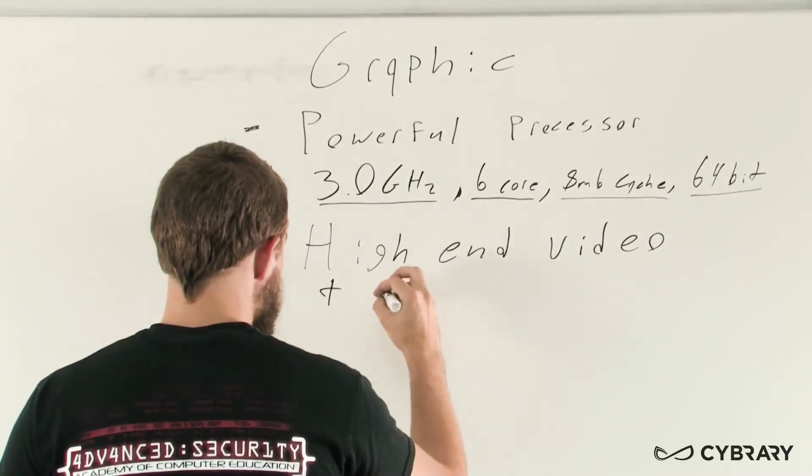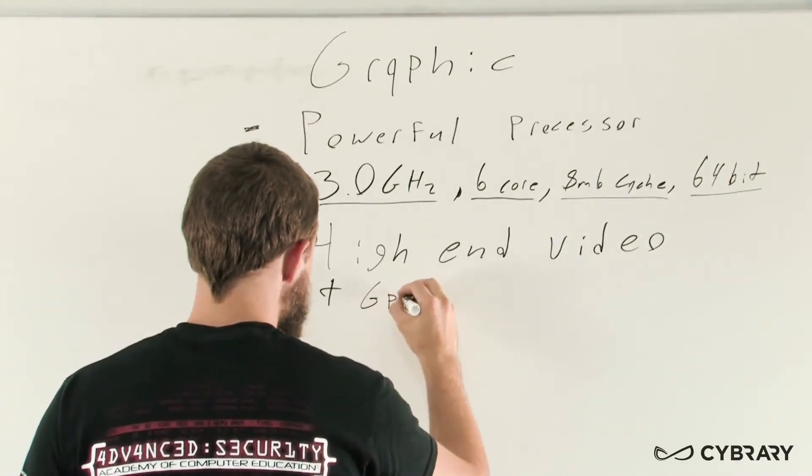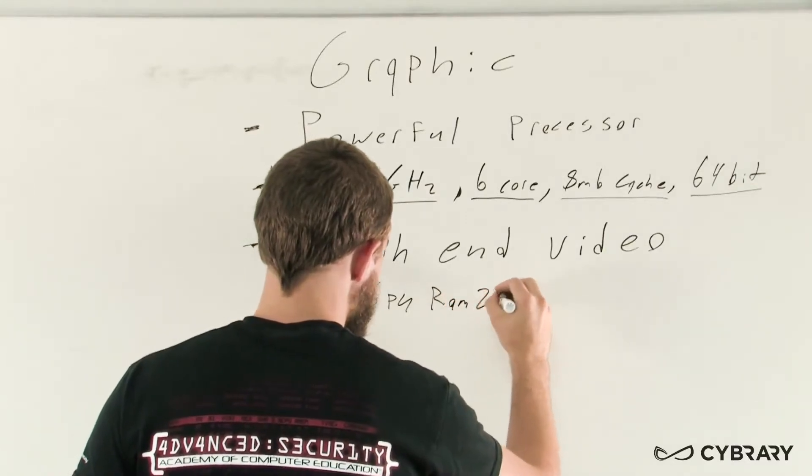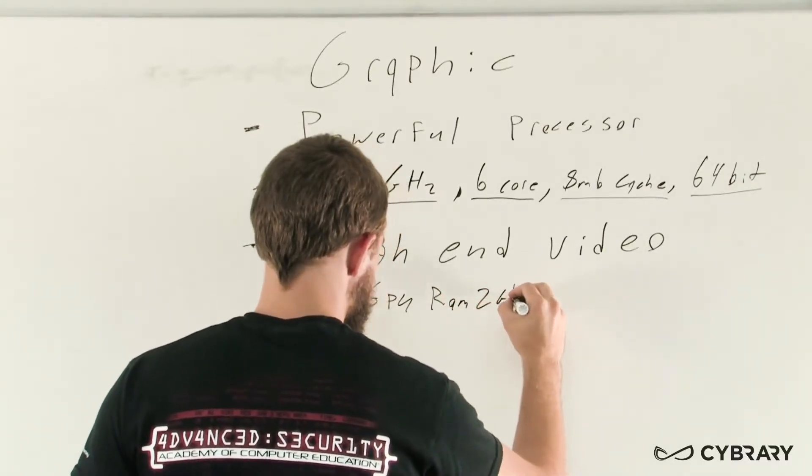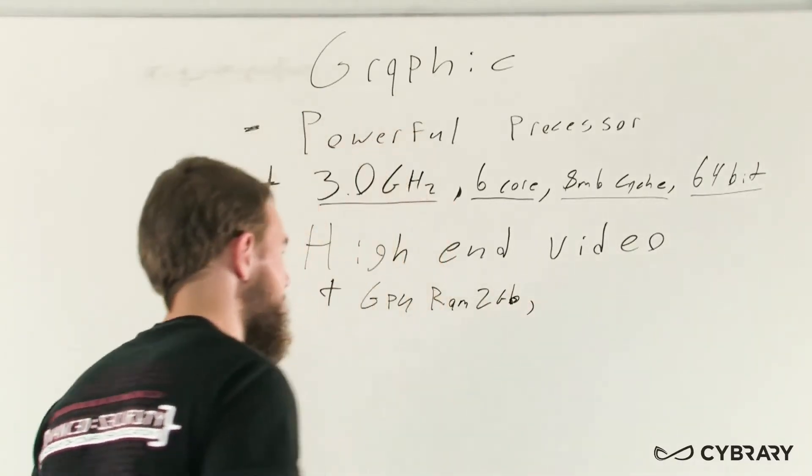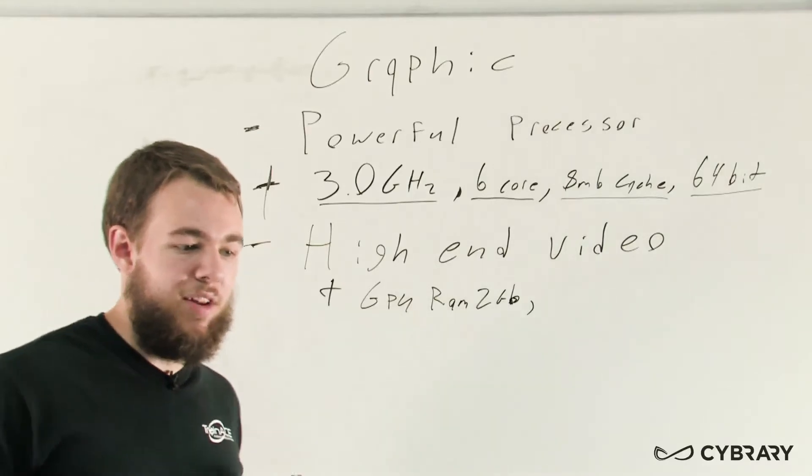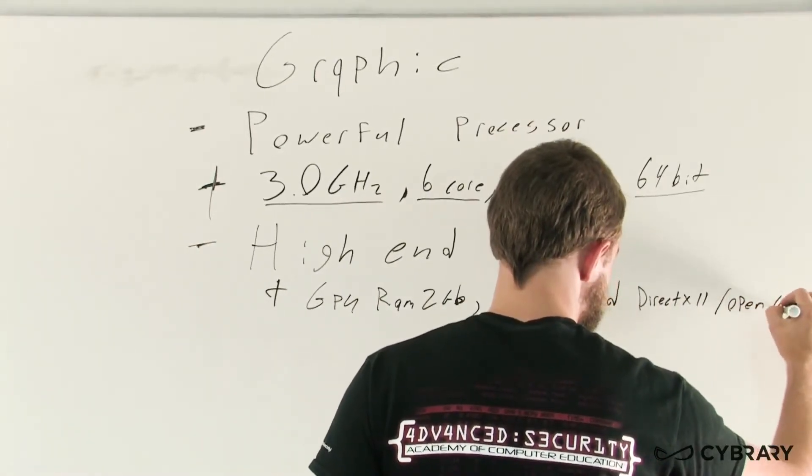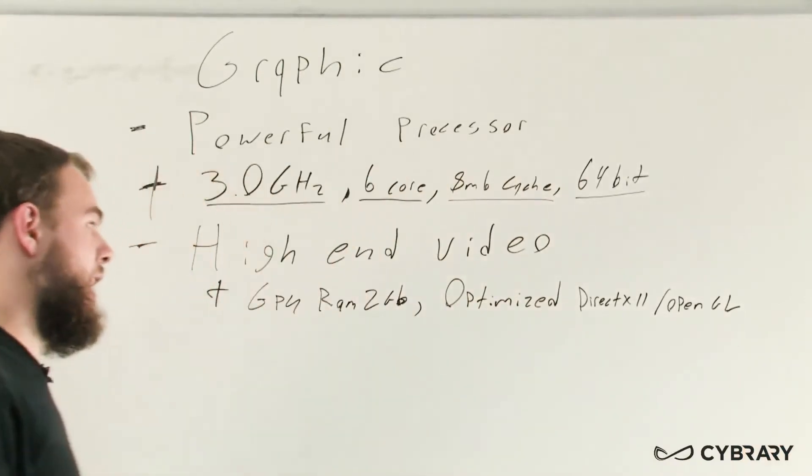For our high-end video card, some of our technical specifications: we want to see if we can get one with at least a GPU RAM of 2 gigabits or better. That's the dedicated RAM for the GPU, for the graphics processing unit. We want one that's optimized for DirectX 11 or OpenGL.